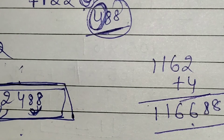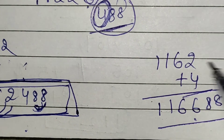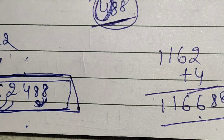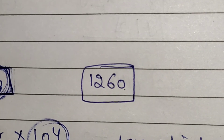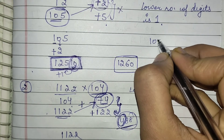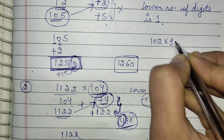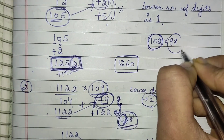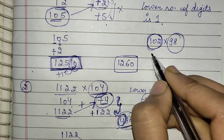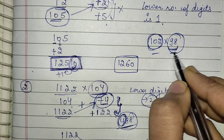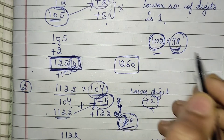This is what you have to take care of when the two numbers have different bases. In the next video, we will understand how to do multiplication of numbers where one number is above the base and another number is below the base. Let us meet in the next video where we will try to solve these kinds of problems.